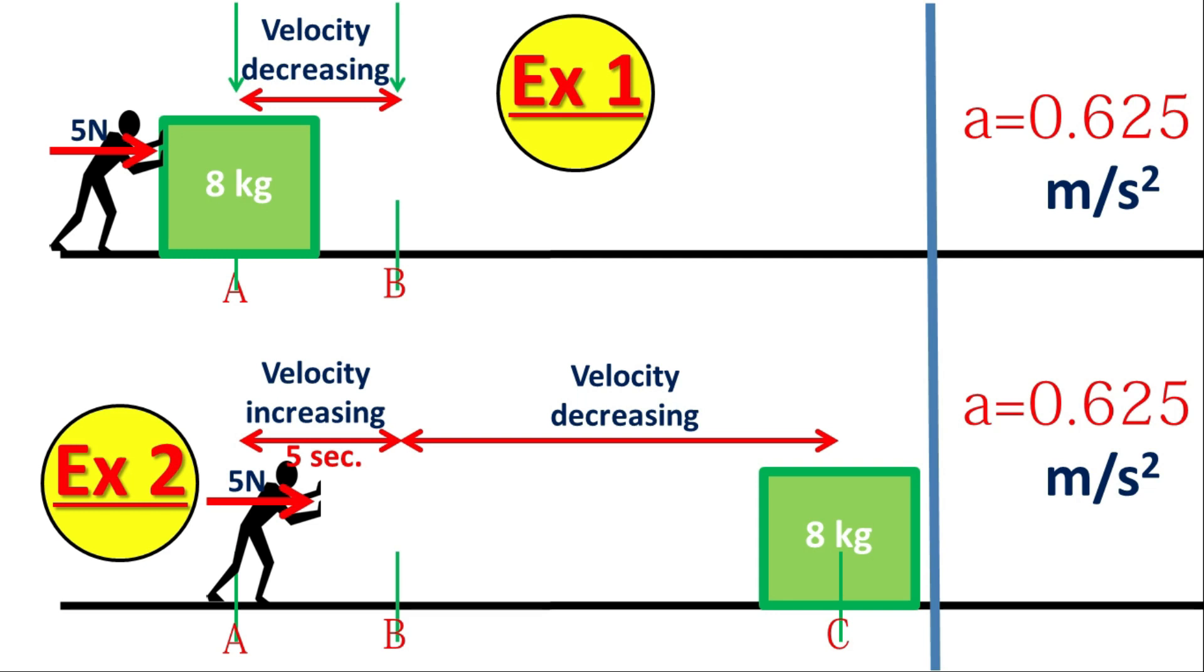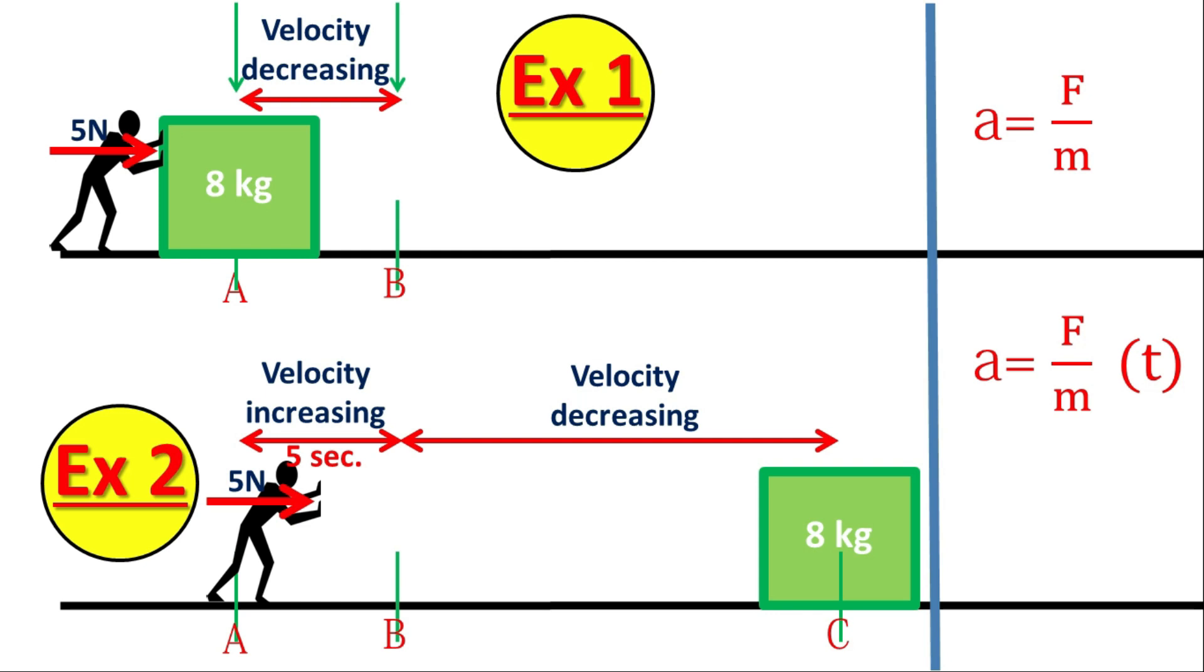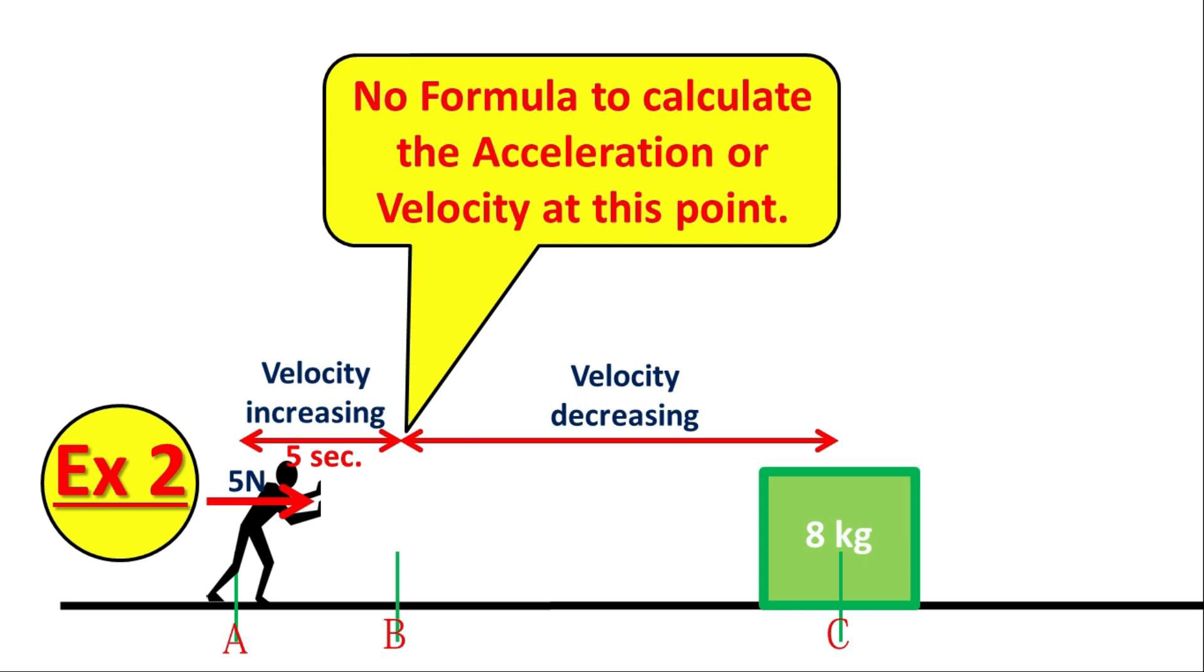According to formula, in example 2, value of acceleration will not be changed until in the right side of the formula, time duration T is not involved. But in present science, it is not there. For this type of condition, present classical physics is not having any formula. That's why in classical physics, this type of questions are never asked, never discussed. Because present concept and calculation of classical physics cannot solve this.